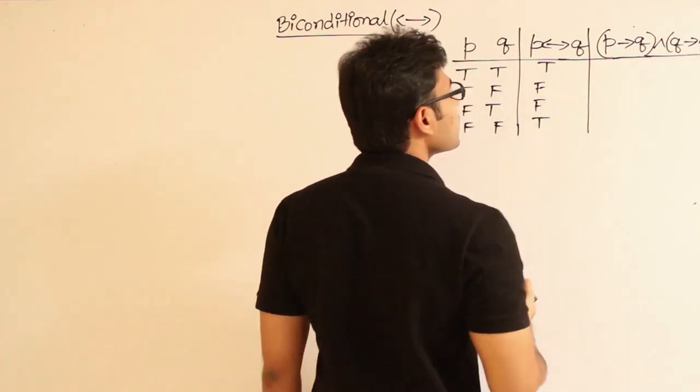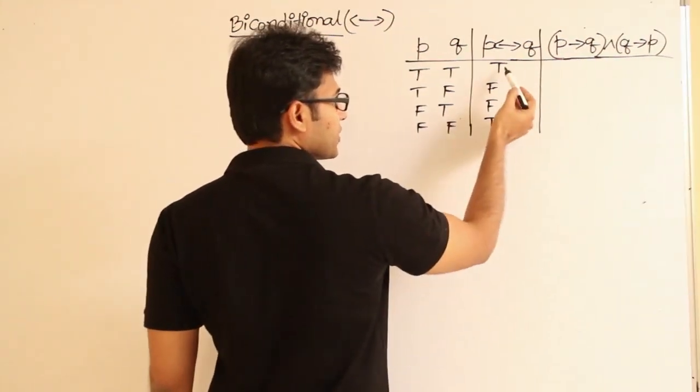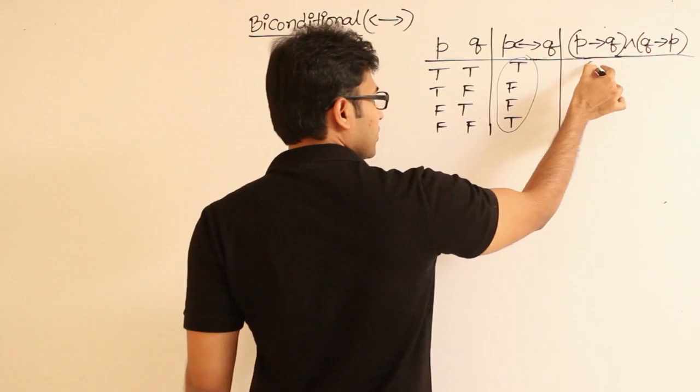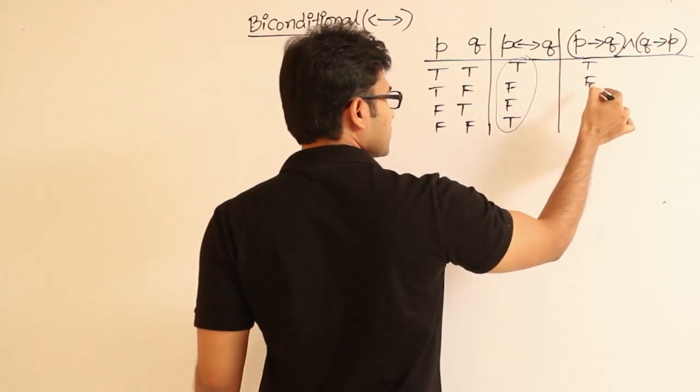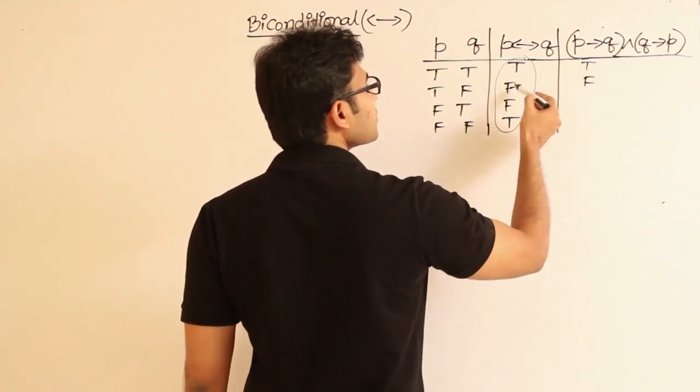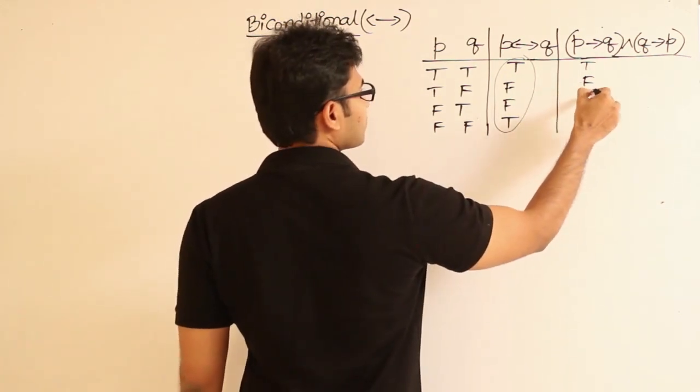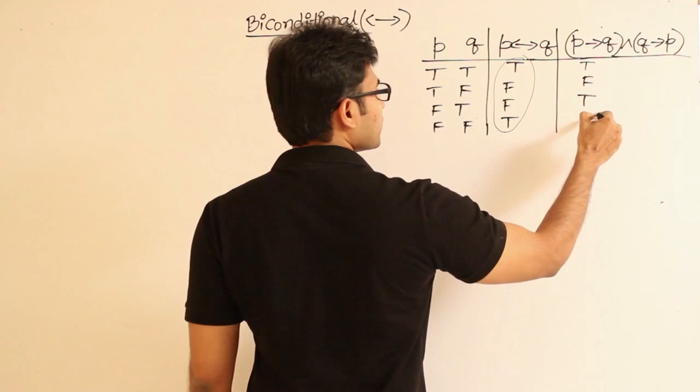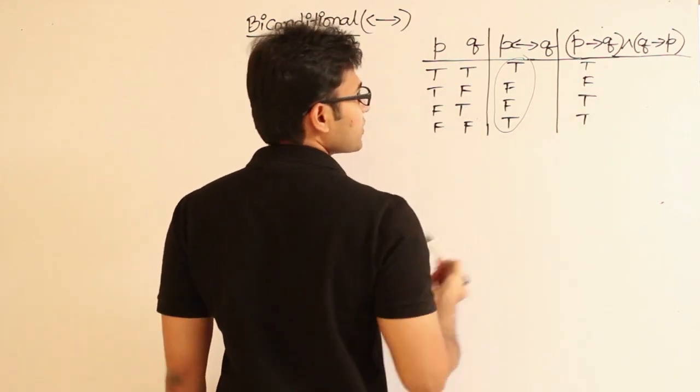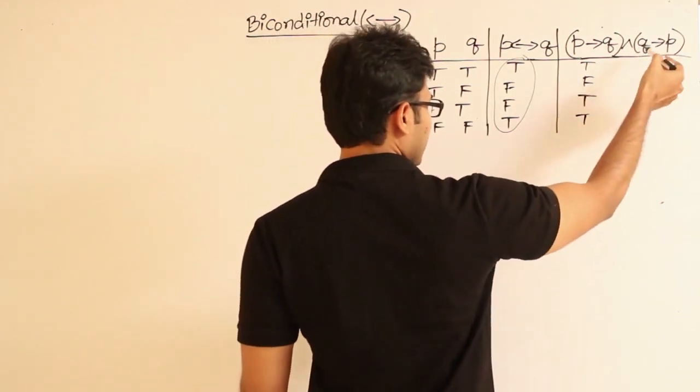Alright, so how can you know it? If you are talking about P implies Q, this is what you know. So true, false - sorry, P implies Q, this is P double implies Q. So true, true. This is P implies Q if P and Q are like this. And what about Q implies P?